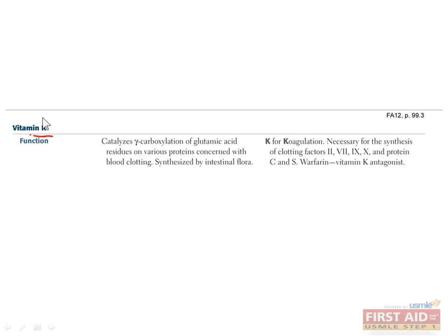Vitamin K, also called phylloquinone, is a fat-soluble vitamin that is mostly acquired from intestinal flora, but also found in some vegetable and animal sources. It's used in the liver to produce clotting factors 2, 7, 9, 10, and protein C and S, because it's needed for a step called gamma carboxylation of glutamic acid residues on these proteins.